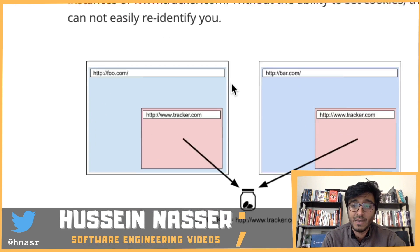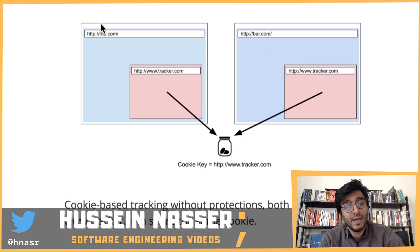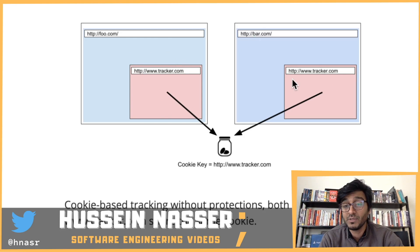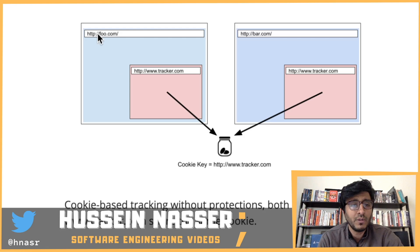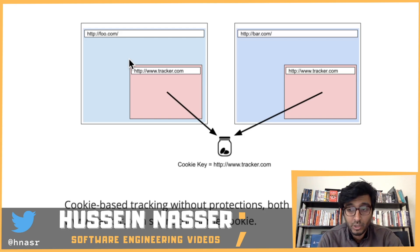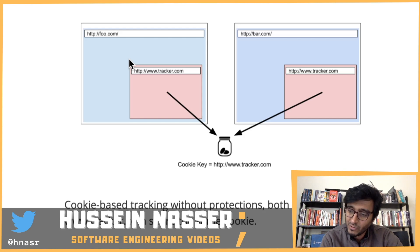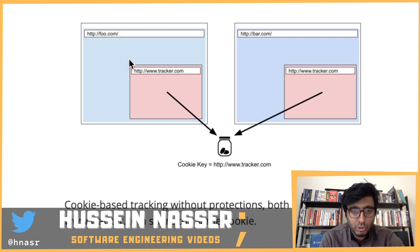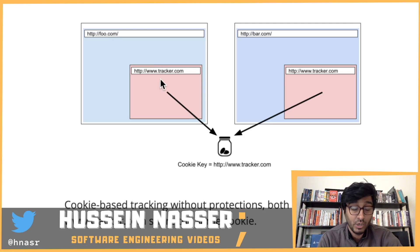Here's a concrete example. Say I own foo.com and bar.com, and I've put a script from tracker.com on both sites. Before the Firefox change: you visit foo.com for the first time, a script sends a request to tracker.com. Since there's no existing cookie, tracker.com generates a unique identifier for you and returns it, setting a cookie for tracker.com.